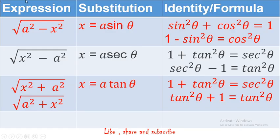Now let us start with the actual substitution part. Substitutions are also based on a trick. The trick is this: just recall the formula which we are going to use, compare with the formula, and forget about the root for now — just look at a² − x². Which formula applies here? We can apply sin²θ + cos²θ = 1. Just send sin to the other side: 1 − sin²θ = cos²θ. Now compare both of them.